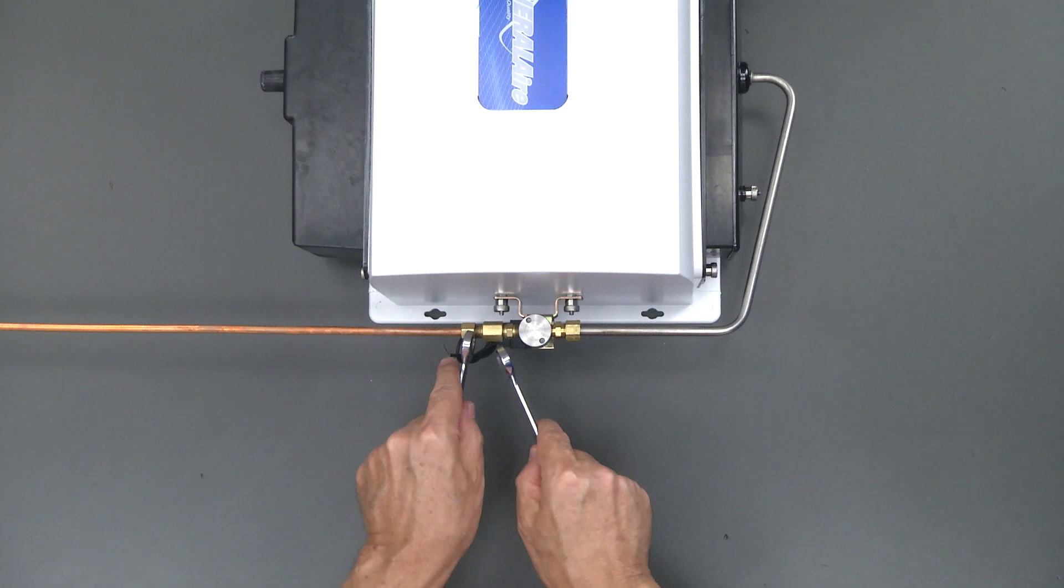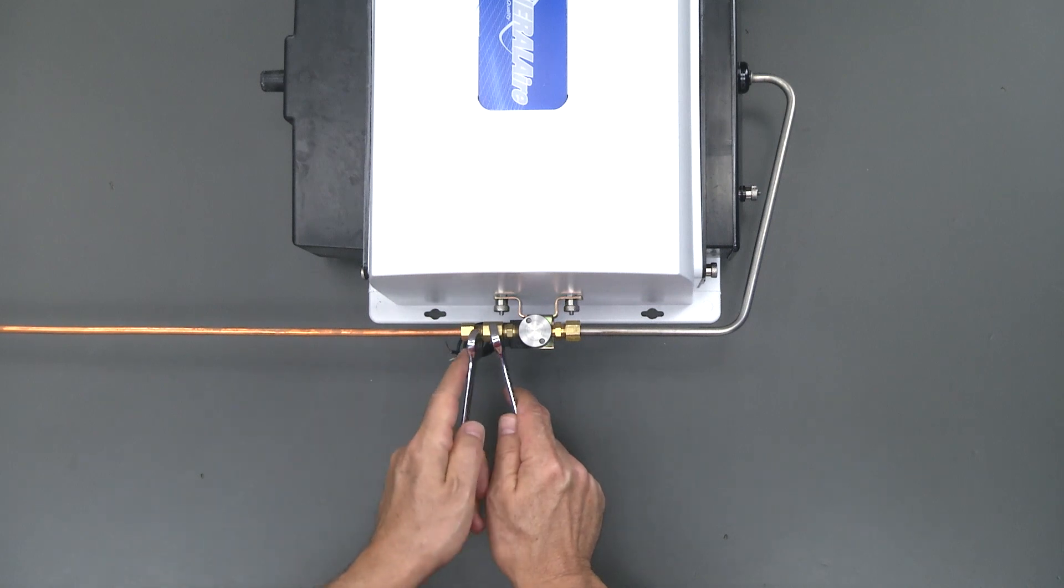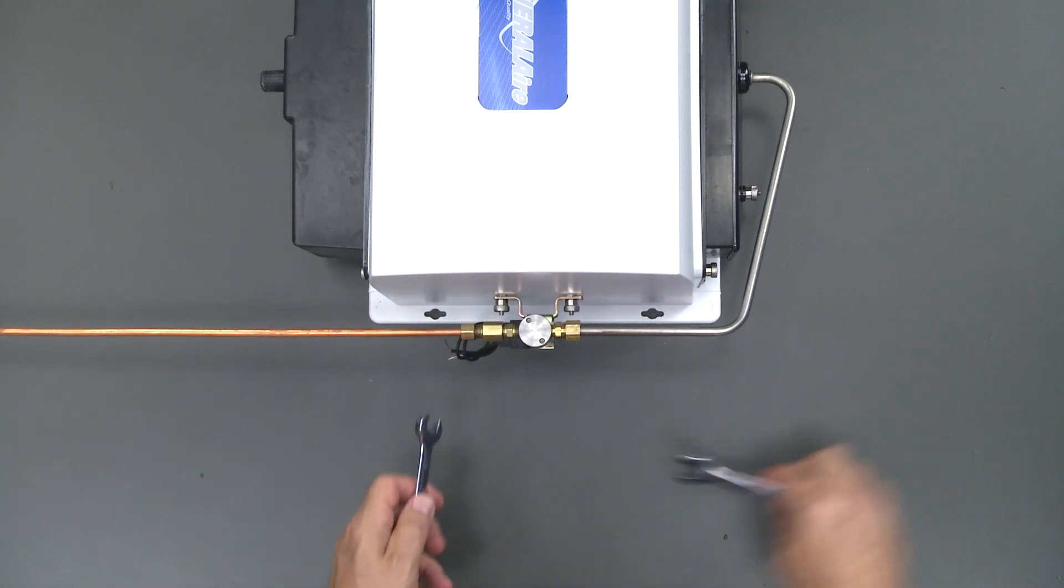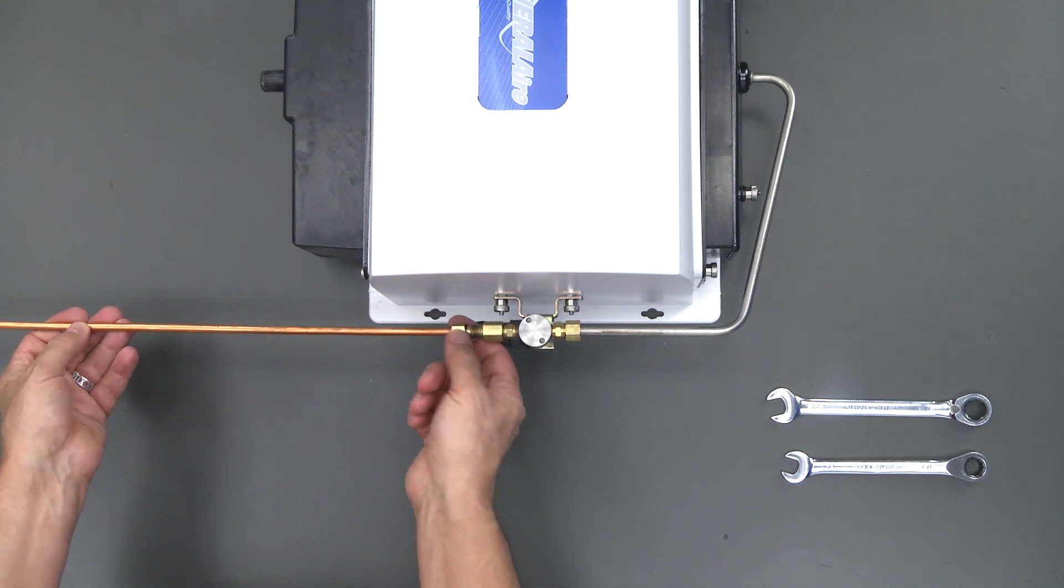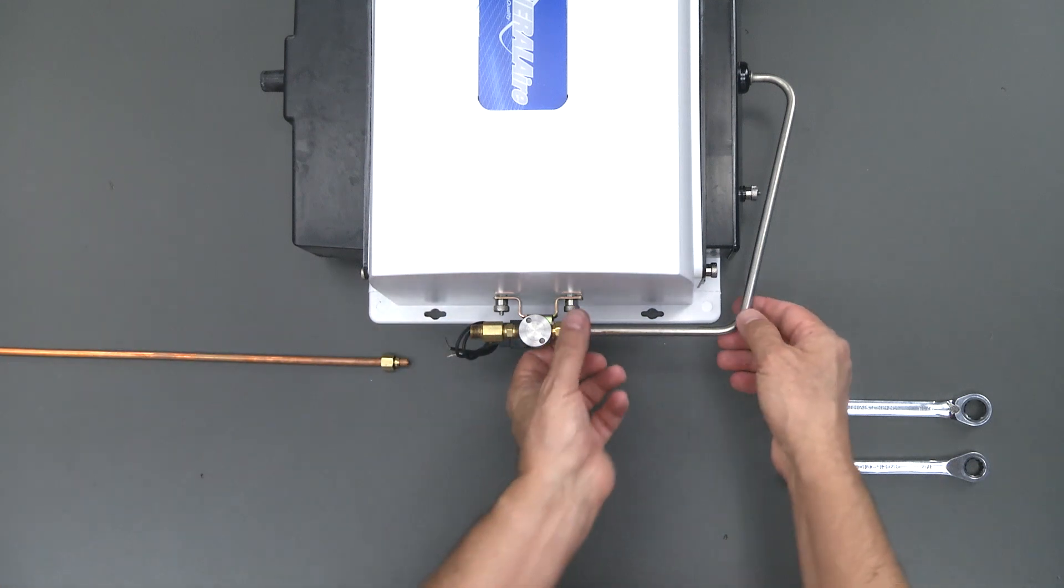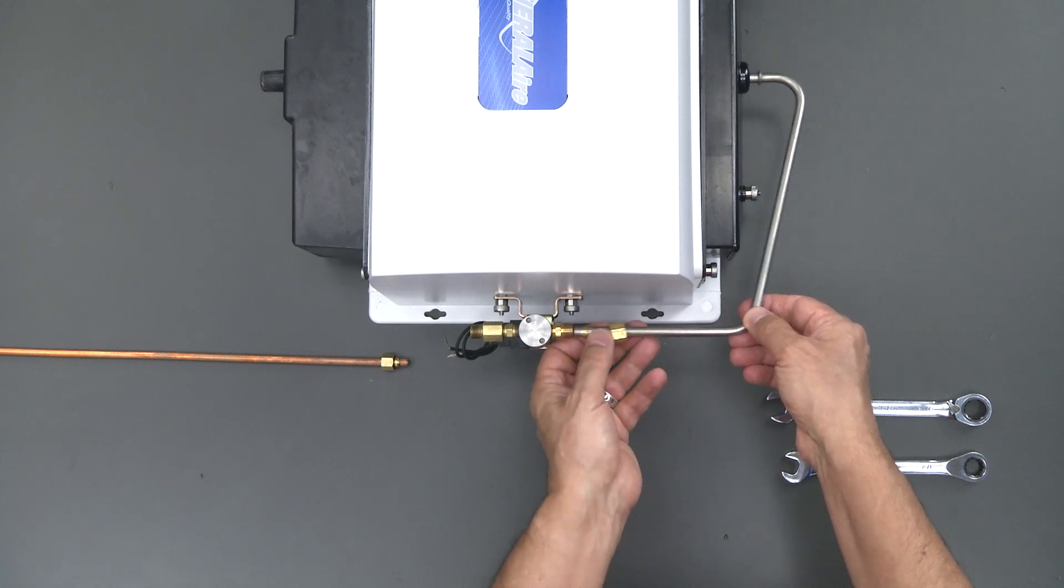We're just going to loosen that up. Now we'll spin these lines off. There we go, there's the water line and the feed tube.